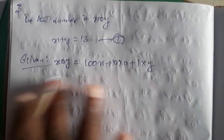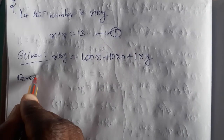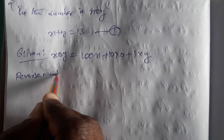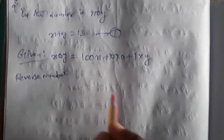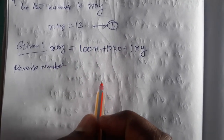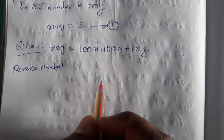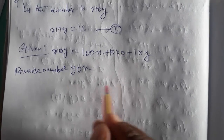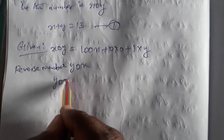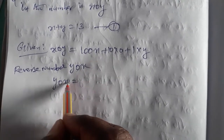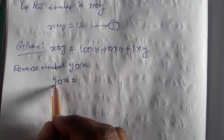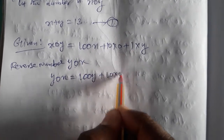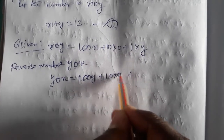When the digits are reversed, the reverse number is y, 0, x. So: x is the units place, 0 is the tens place, y is the hundreds place. Therefore the reversed number equals 100y plus 10 into 0 plus 1 into x, which gives 100y plus x.